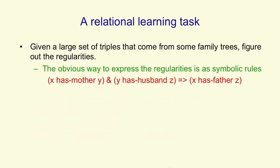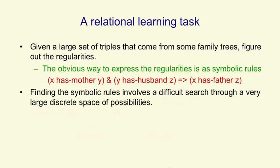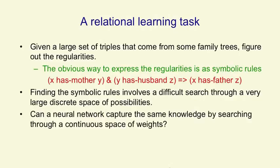Now, the obvious way to express the regularities is as symbolic rules. For example, X has mother Y, and Y has husband Z, implies X has father Z. We could search for such rules, but this would involve a search through quite a large, combinatorially large space of discrete possibilities. A very different way to try and capture the same information is to use a neural network that searches through a continuous space of real-valued weights to try and capture the information.